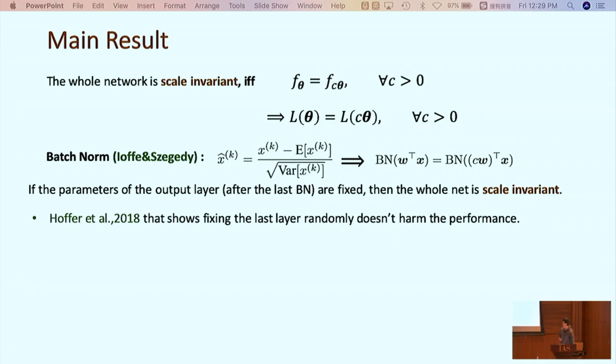If the parameters of the output layer, namely all parameters after the last BN are fixed, then the whole net is scale invariant. Recent work by Hoffer et al. shows that fixing the last layer randomly doesn't harm performance.